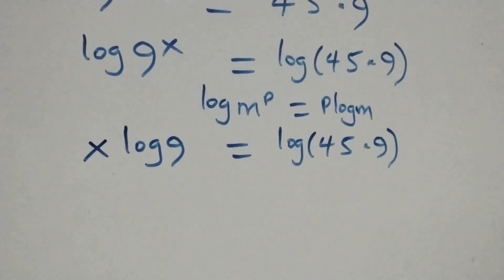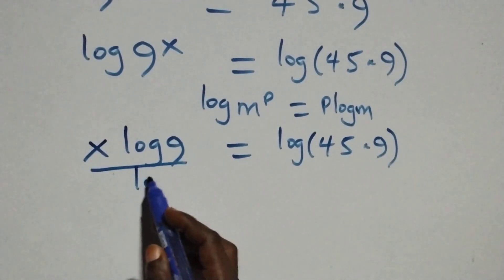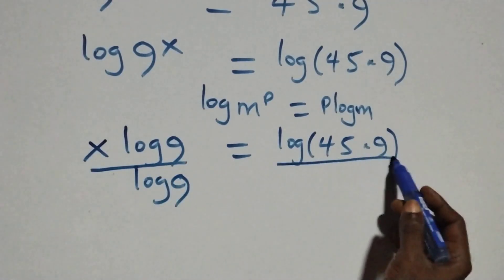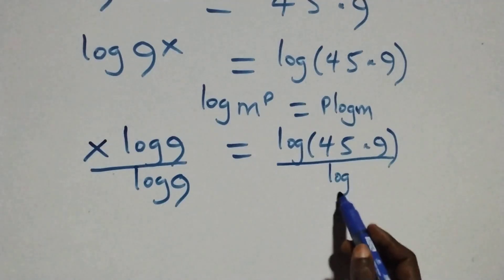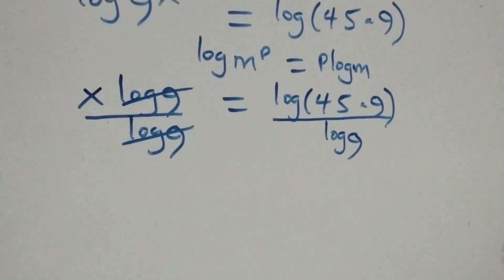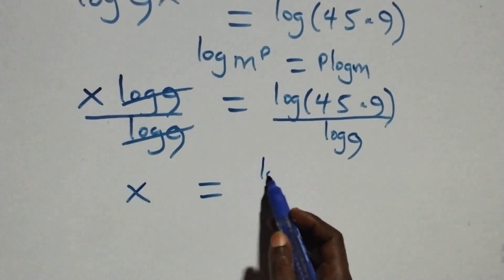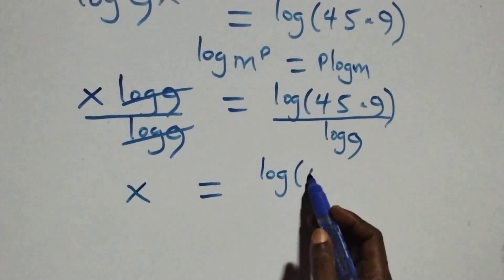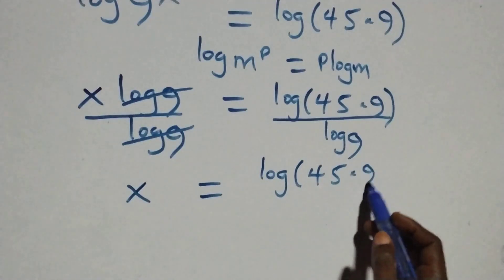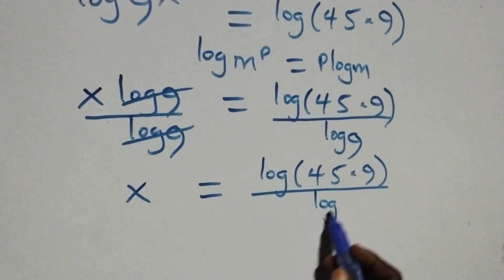The next step is to divide both sides by log 9 — divide this side by log 9 and also divide the other side by log 9. So log 9 cancels and we have x equals log(45 × 9) over log 9.